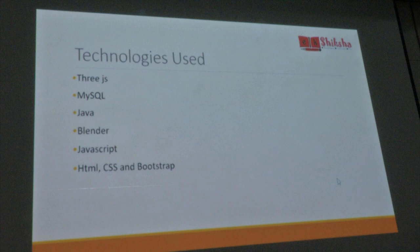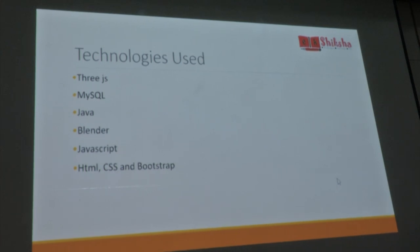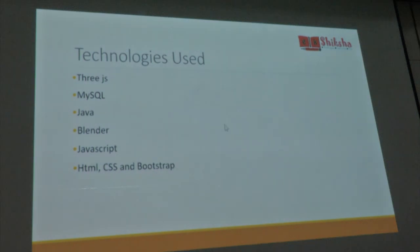These are some of the technologies we used in our project. Three.js is a JavaScript library for creating 3D animations. For the database part we used MySQL. For the backend, Java. For 3D modeling and making advanced objects, we used Blender. For the frontend we used HTML, CSS, and Bootstrap.